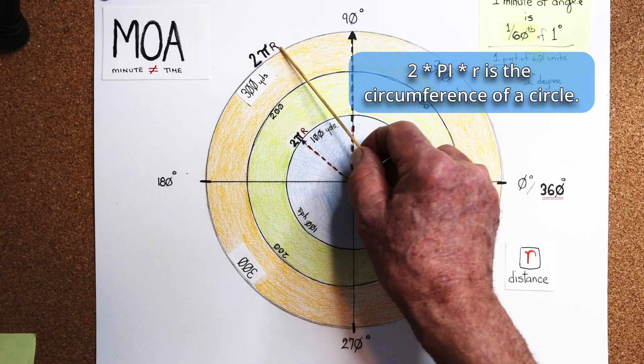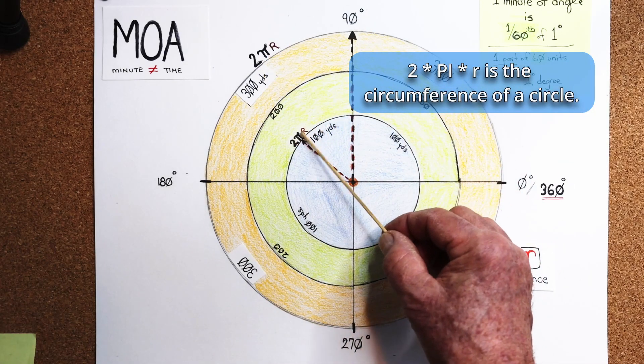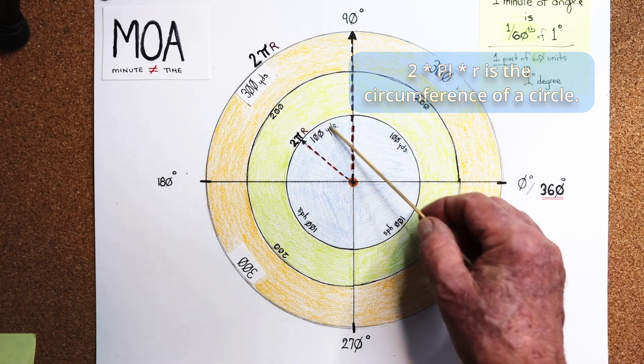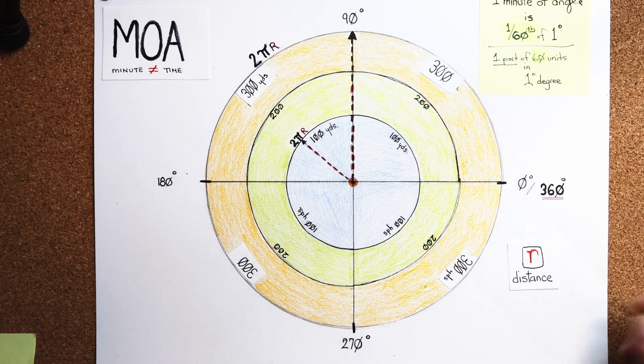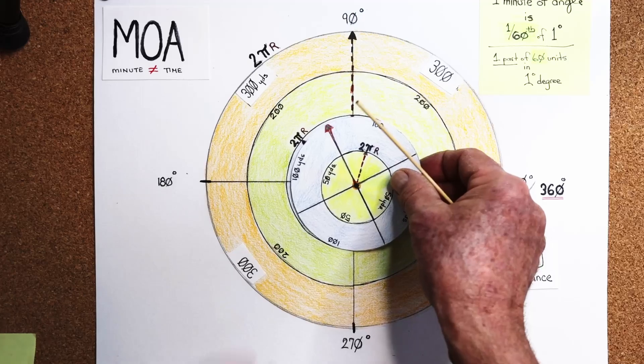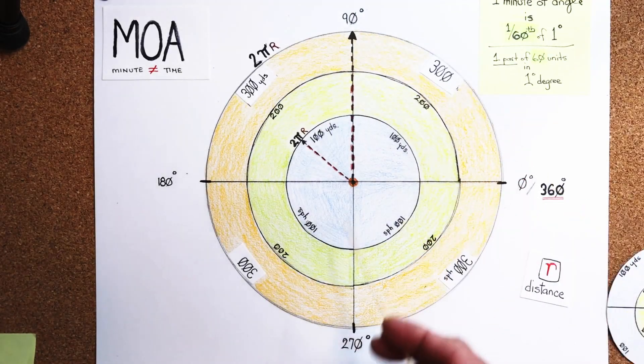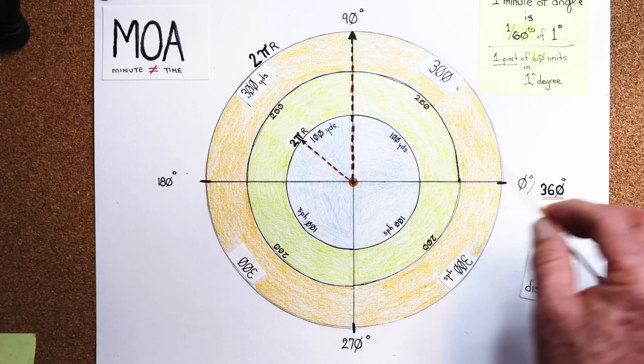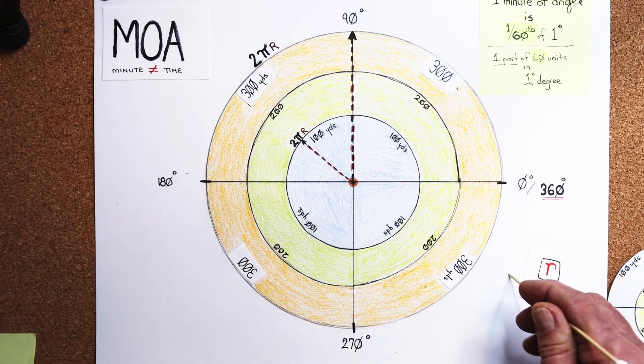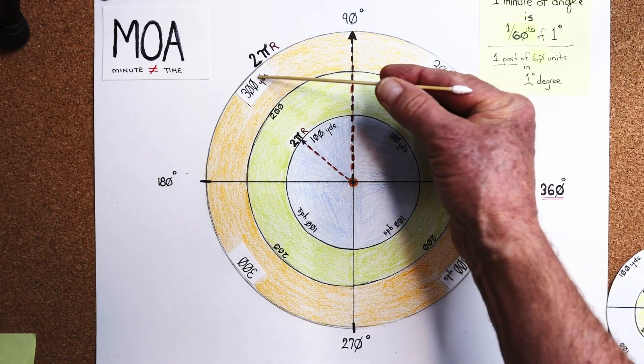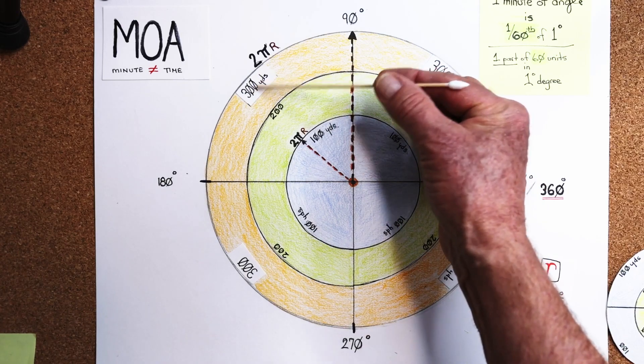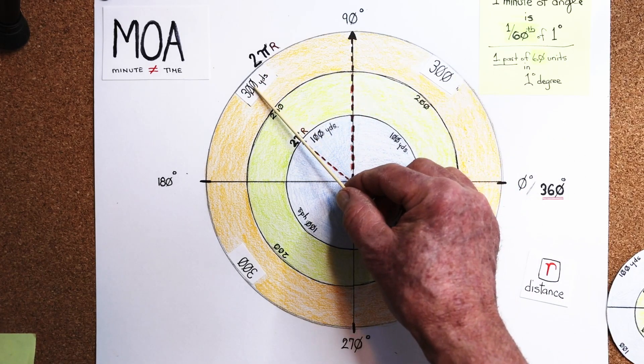So you'll see 2πr here, the definition 2πr here, outside the 100, and you'll see the definition of 2πr right here in 50 yards. And because we want minutes of angle, and we want the final product in inches, remember, you always change in your multiplication in the formula, yards to inches.